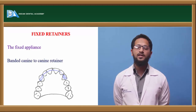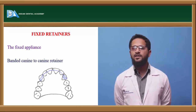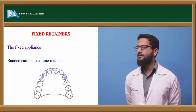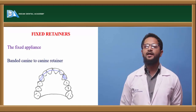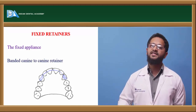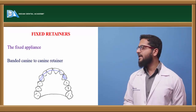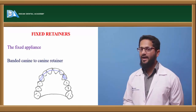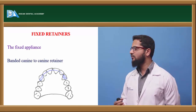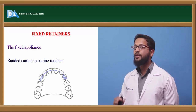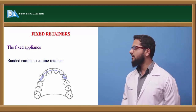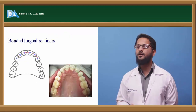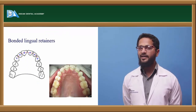The main problem with removable retainers is patient compliance — patients often do not wear them, resulting in relapse. Fixed retainers can be given in such patients. The first option is leaving the fixed appliance used for treatment in place as a retainer. The second is the banded canine-to-canine retainer, where the canines are banded and a heavy stainless steel wire is adapted over the lingual or palatal aspect of the teeth and soldered to the bands. It is a very good retainer but requires some laboratory procedures.